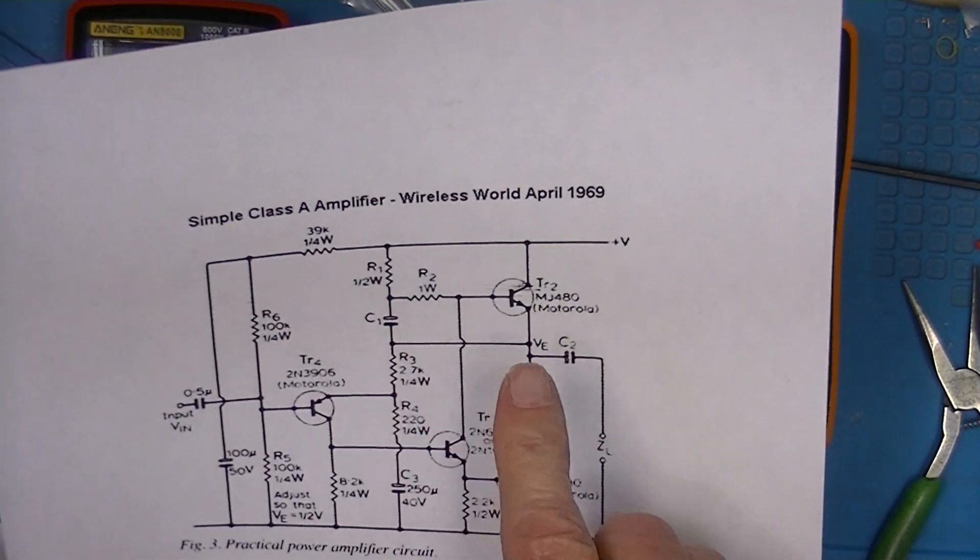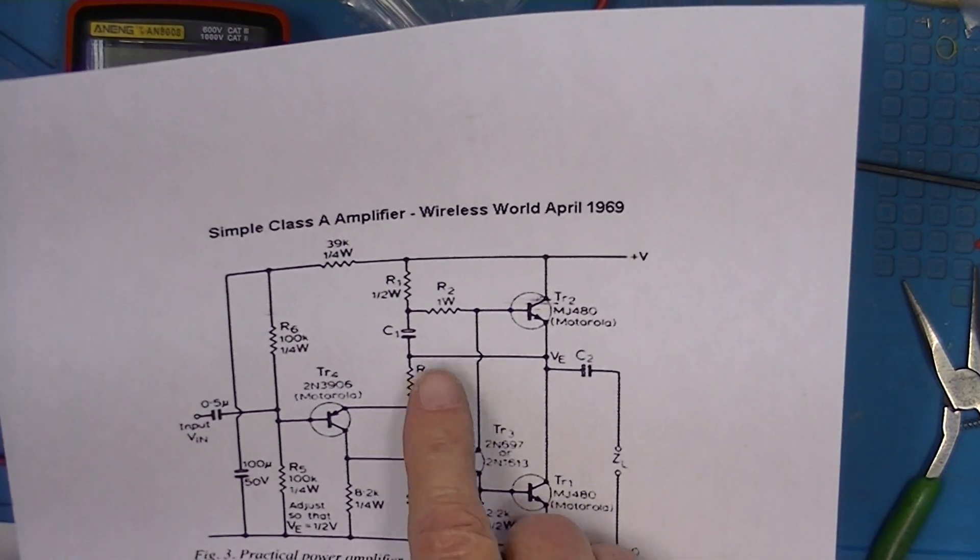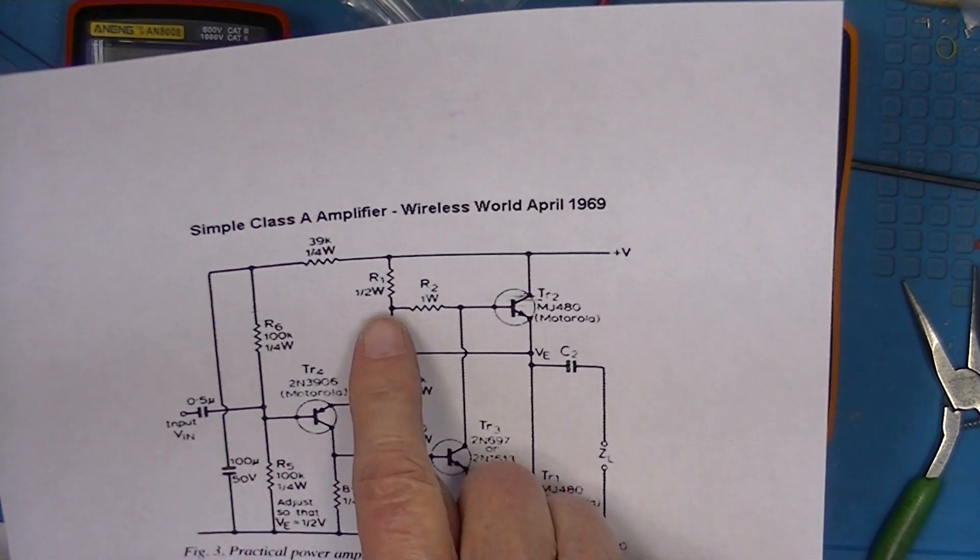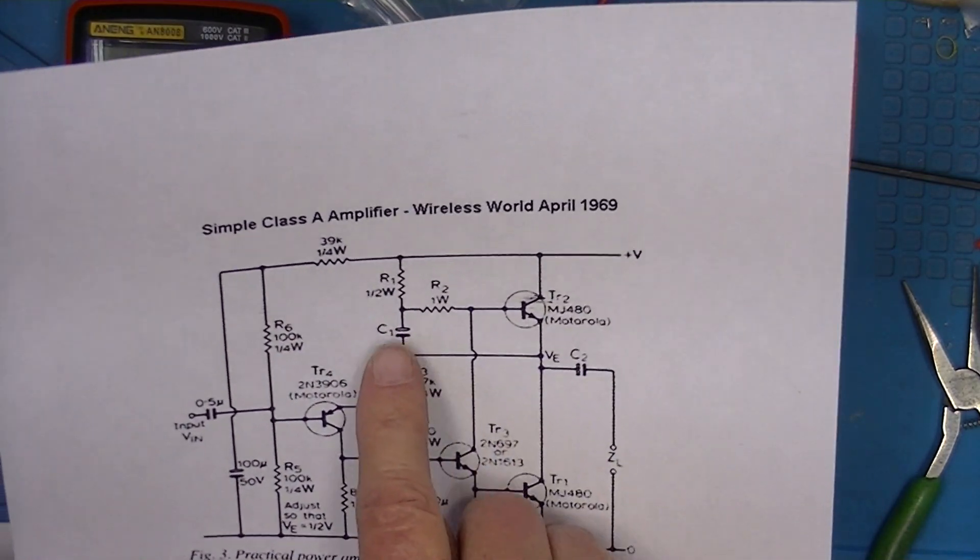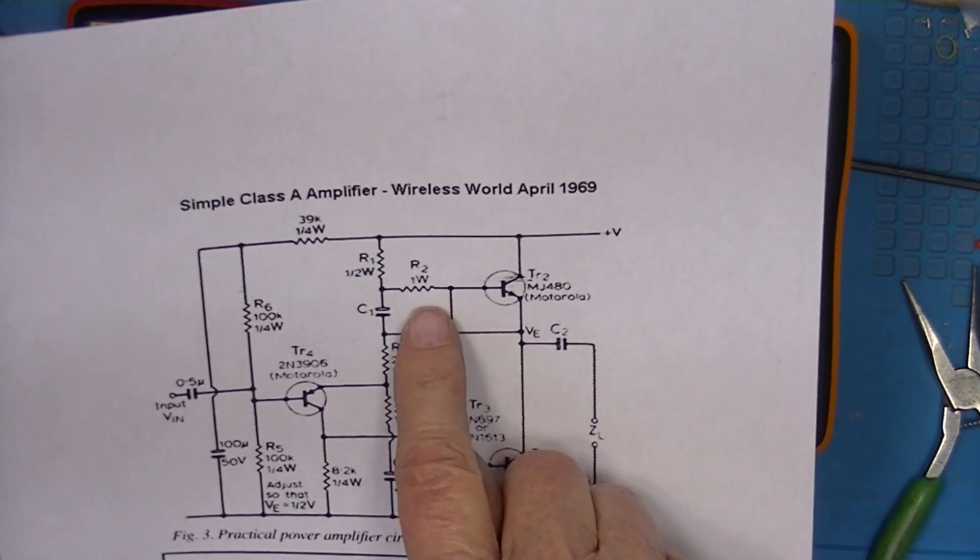Here's what JLH said in his original drawing. All of this could be 1/4 watt, 1/4 watt, 1/4 watt. This was to be a 1/2 watt and this was to be 1 watt.